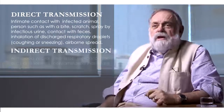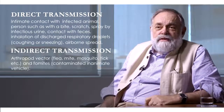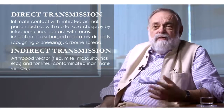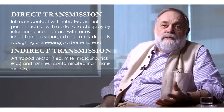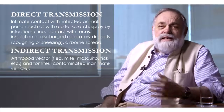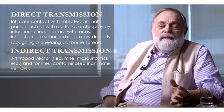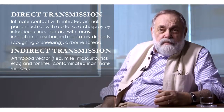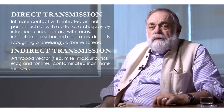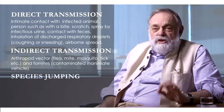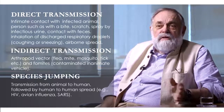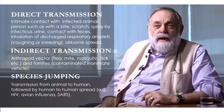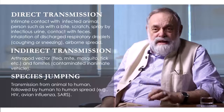Then there's indirect transmission, where there is an arthropod vector such as a flea, a mite, a mosquito, or a tick, and fomites such as cockroaches, that are contaminated with the particular product going from an animal to a human. Another term we should be familiar with is species jumping — the transmission from animals to humans, followed by human-to-human spread. This is the group we are most interested in.